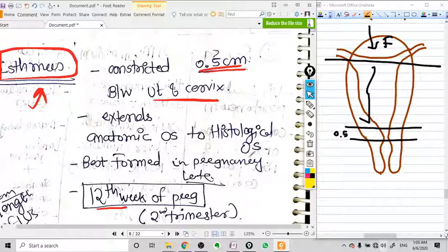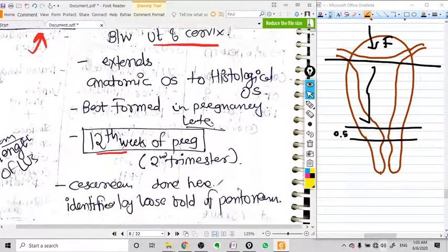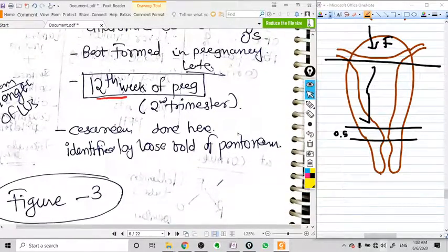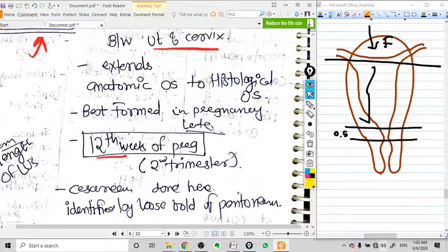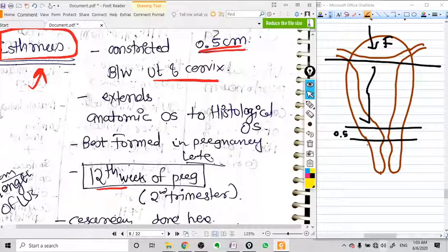If we go with the uterus proper, the walls are mainly made of myometrium and have smooth muscles. But if we go with the cervix, the amount of smooth muscle decreases up to 10 percent only, and the cervix is mainly formed by collagen. So this transition part is called isthmus.